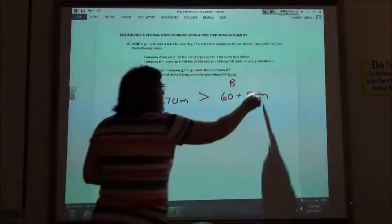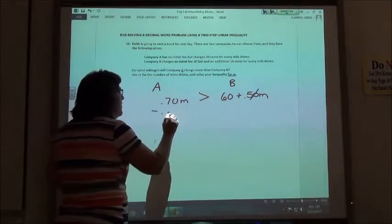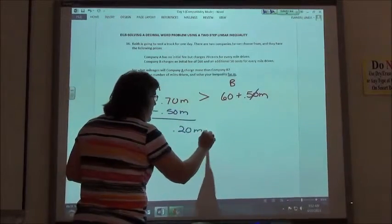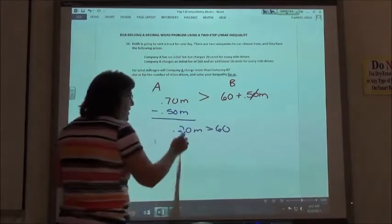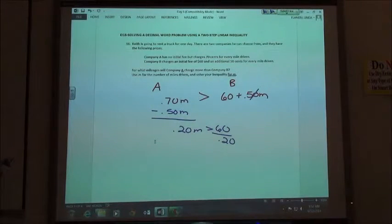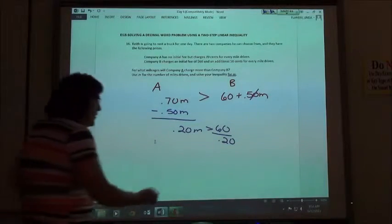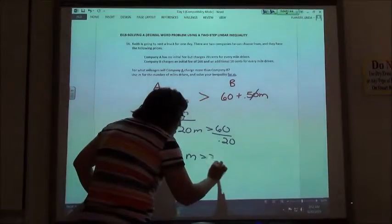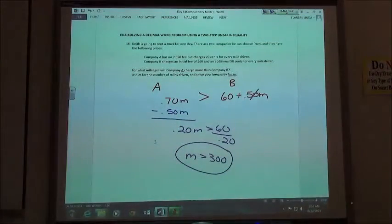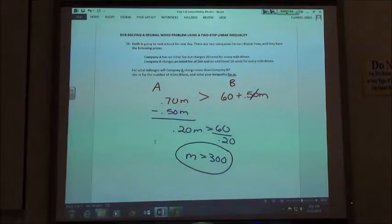So if I'm going to solve that, I'm going to subtract my 0.50M, which would give me 0.20M is greater than 60, and then I have to divide by 0.20. So 60 divided by 0.20 is 300, so M is greater than 300. We would have to drive more than 300 miles for A to charge more than B.